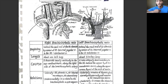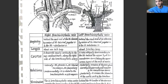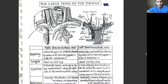The left brachiocephalic vein runs to the right, behind the upper half of the manubrium of the sternum, and along the upper convex aspect of the aortic arch — running just above that. Anteriorly, there is the thymus gland. In the superior region, most anteriorly you have the thymus, and so the notes mention remains of the thymus gland, the sternohyoid muscle, the sternothyroid muscle, and the manubrium sterni. Posteriorly, it crosses the three branches of the aortic arch and the trachea, running anterior to the trachea.